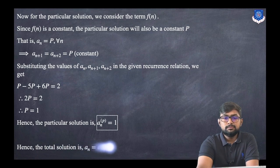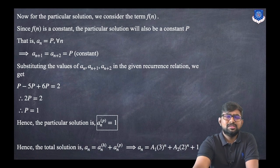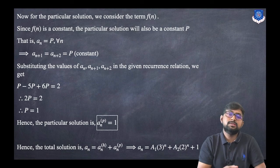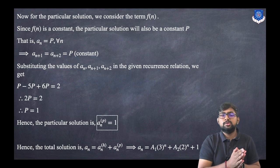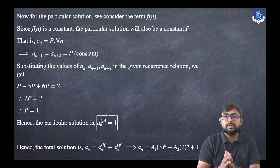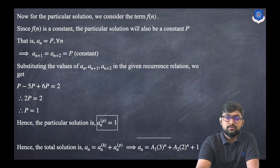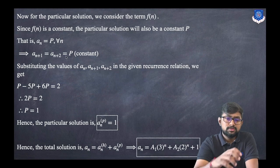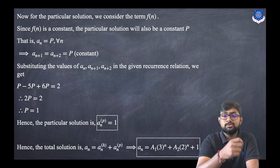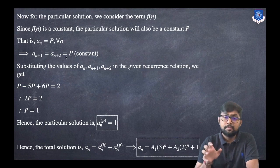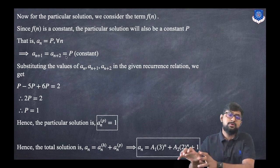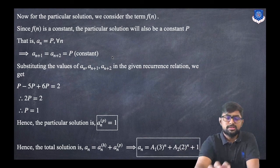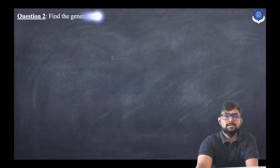The general solution or total solution is the homogeneous solution plus the particular solution: k1·3^n + k2·2^n + 1. This is the final solution.